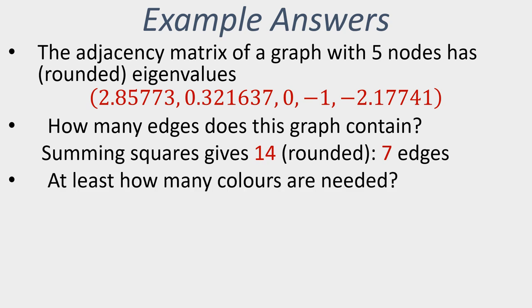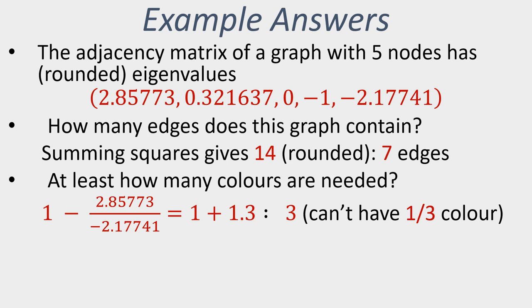What about the colouring problems? If we want to know how many colours minimally we have to use, we look at this computation: 1 minus this value, and that comes to 1 plus 1.3. We can't have a third of a colour. In other words, that tells us the minimum number of colours we need for this five-node graph is 3.